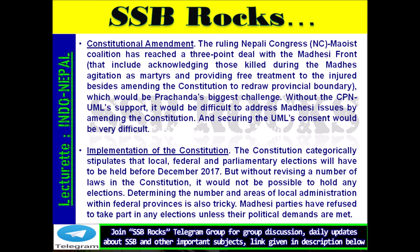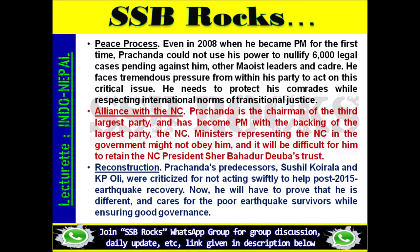Madhesi parties have refused to take part in any elections unless their political demands are met. Peace Process: Even when Prachanda became PM for the first time in 2008, he could not use his power to nullify 6,000 legal cases pending against him and other Maoist leaders and cadres. He faces tremendous pressure from within his party to act on this critical issue and needs to protect his comrades while respecting international norms of transitional justice. Alliance with the NC: Prachanda is chairman of the third largest party and became PM with the backing of the largest party, the NC; ministers representing the NC might not obey him. Reconstruction: His predecessors were criticized for not acting swiftly on post-2015 earthquake recovery, and he will have to prove he cares for poor earthquake survivors while ensuring good governance.